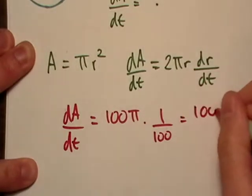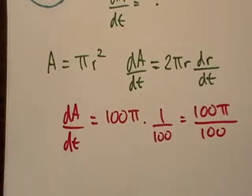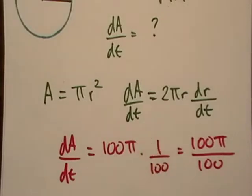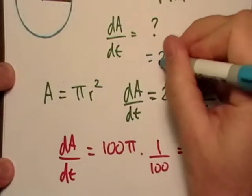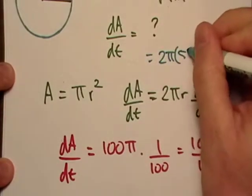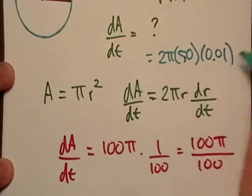And that equals 100 pi over 100. See how I did that? All we did was plug everything in here. So actually let me use a different color right here. So this down here was really just 2 pi times 50 times 0.01.